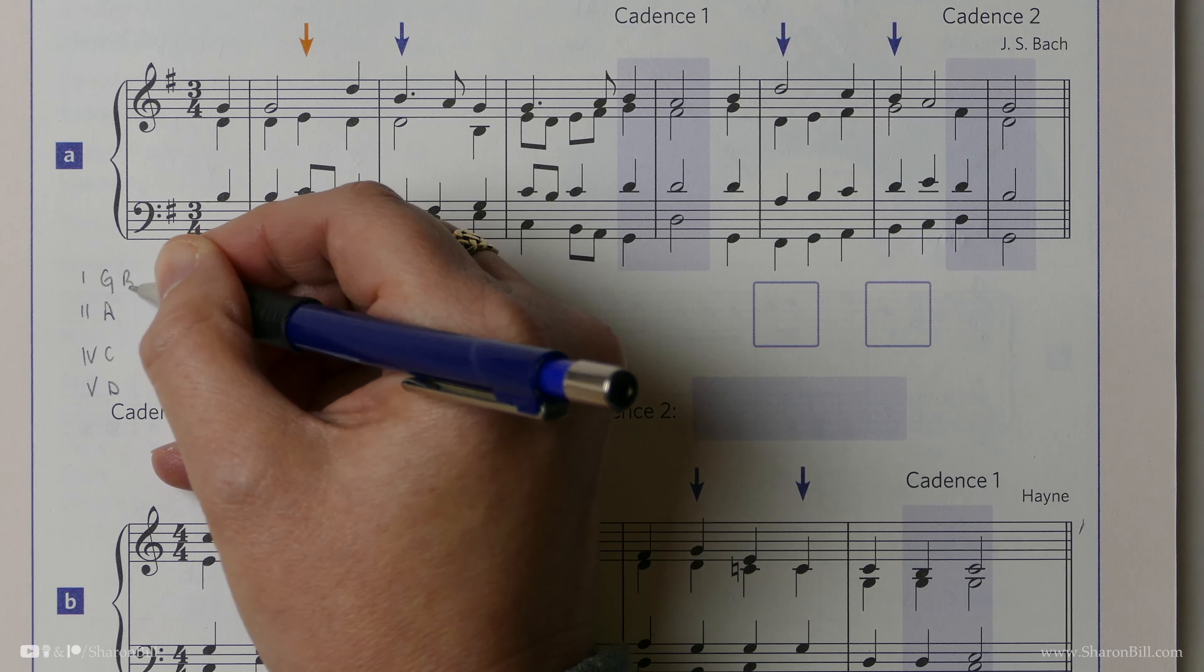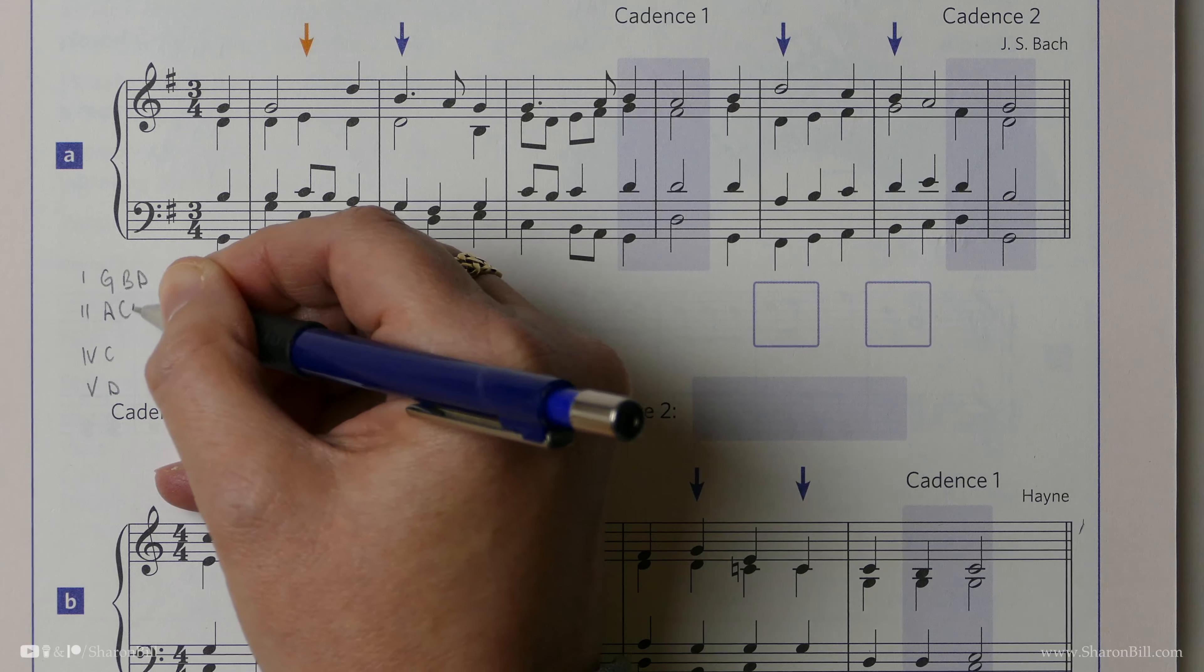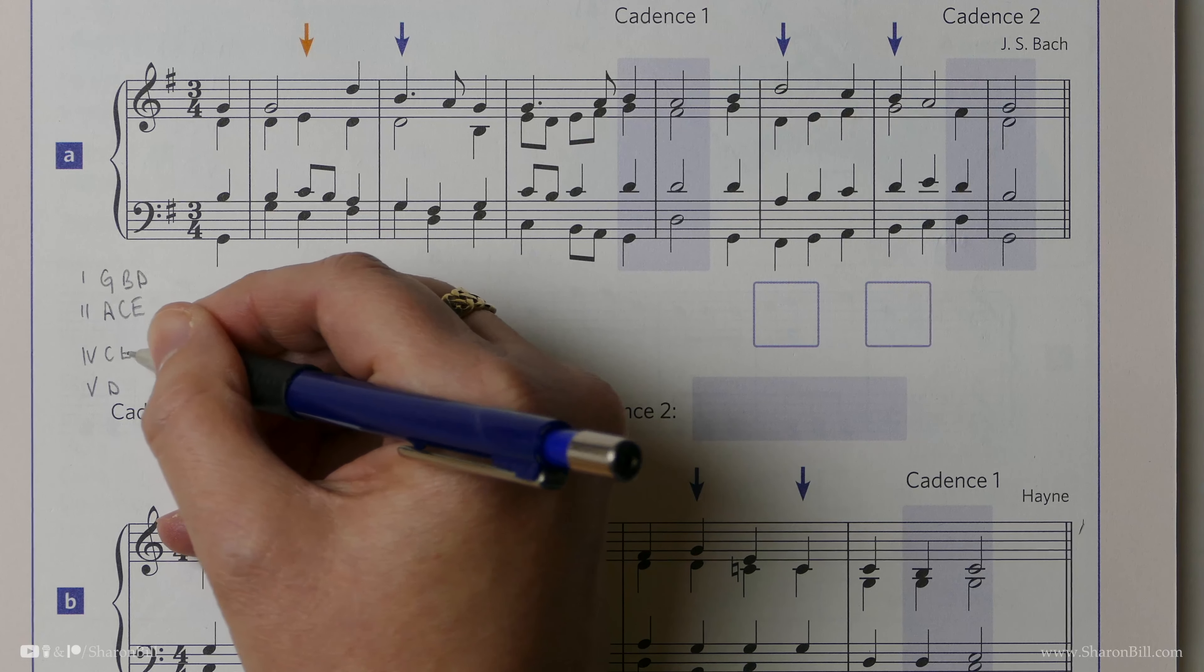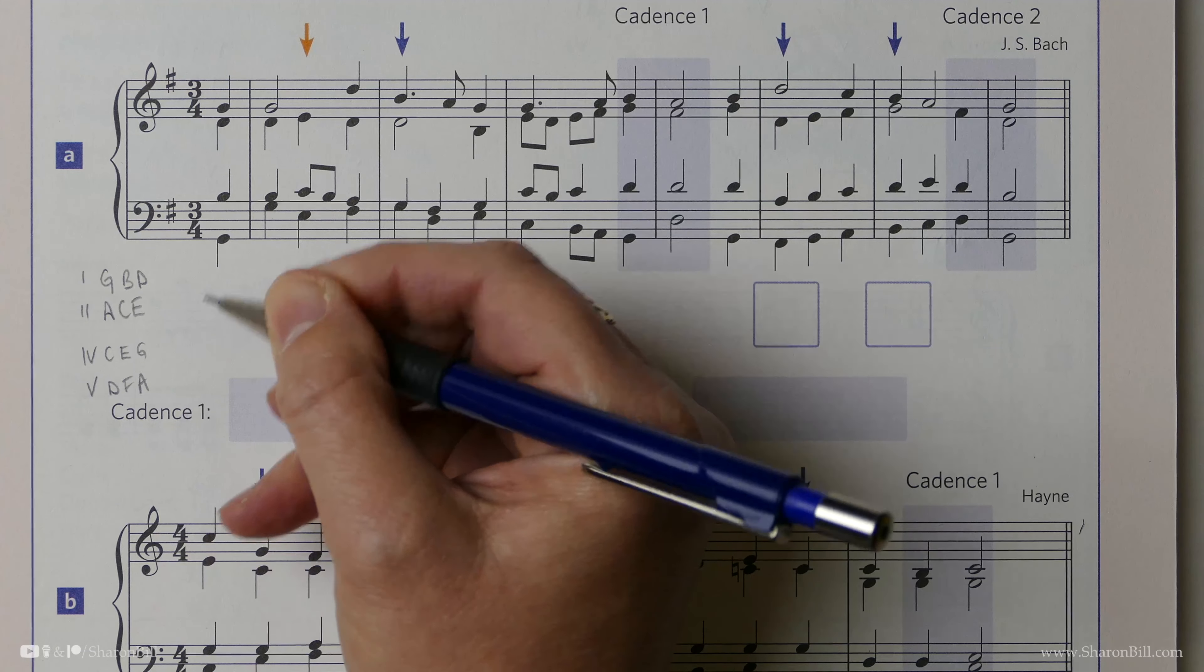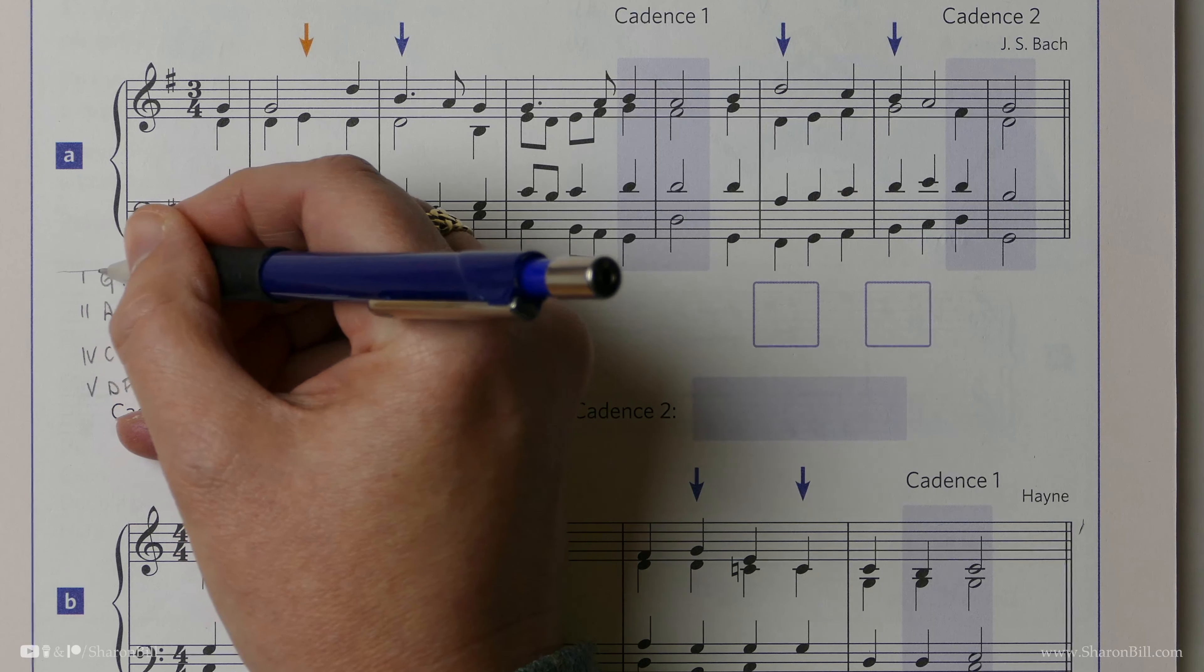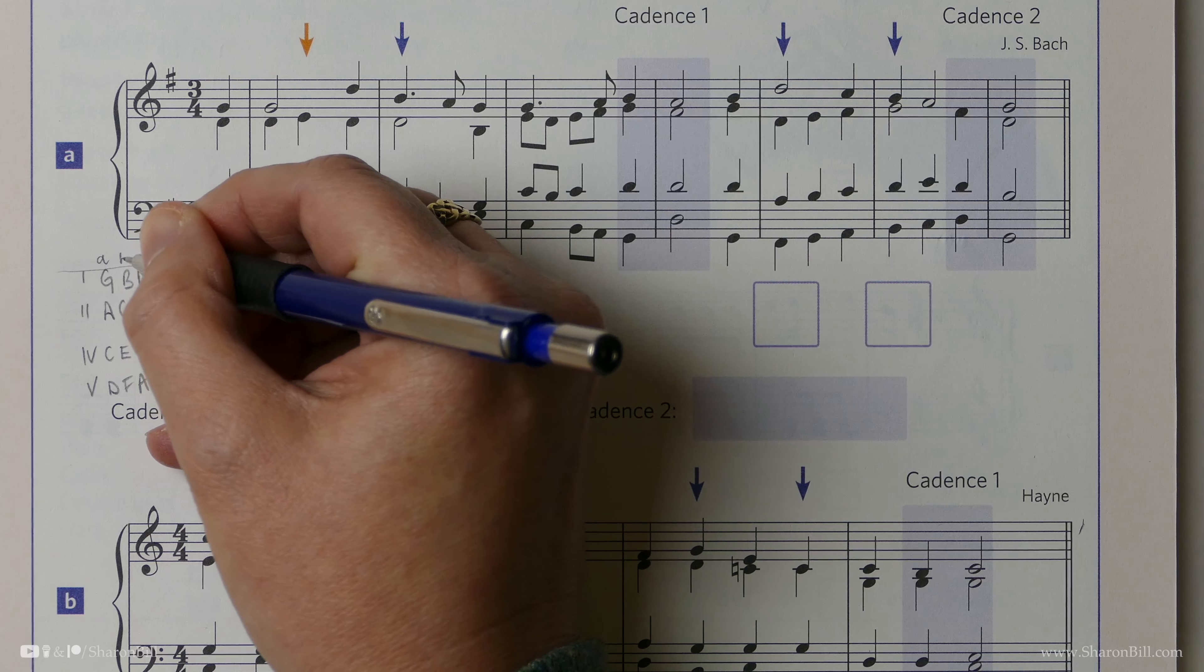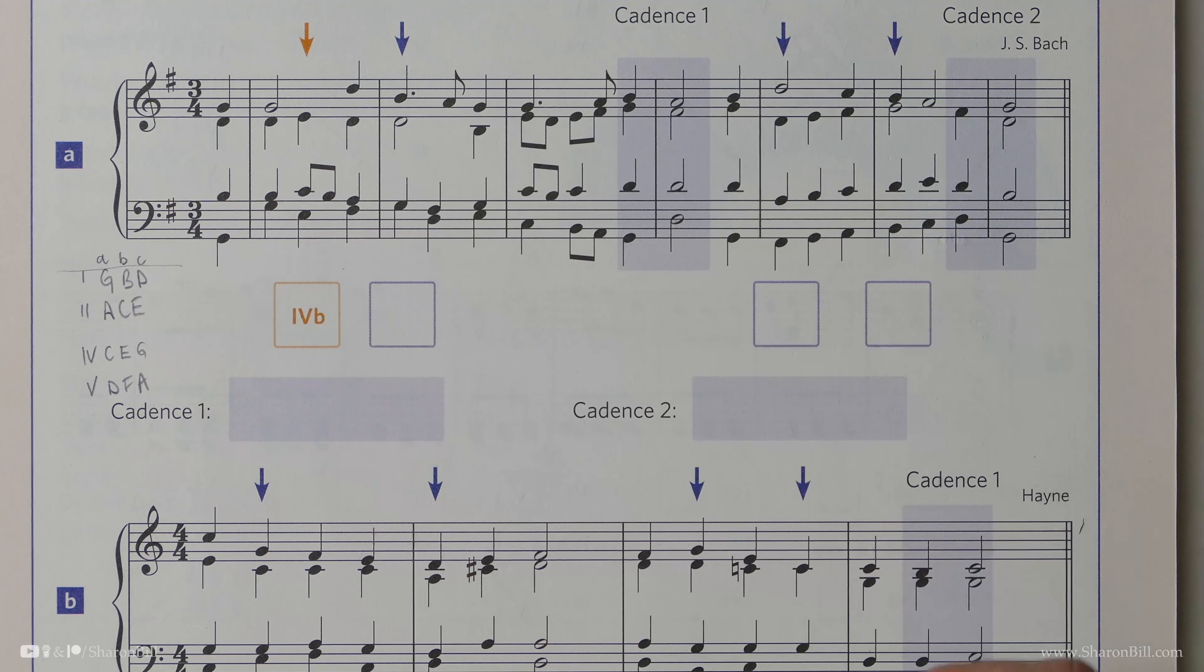Building our triad, G, B, D, based on the 1st, 3rd, 5th, A, C, E, C, E, G, D, F, A. And then we can also prepare to describe whether it's in root position, 1st inversion, 2nd inversion.